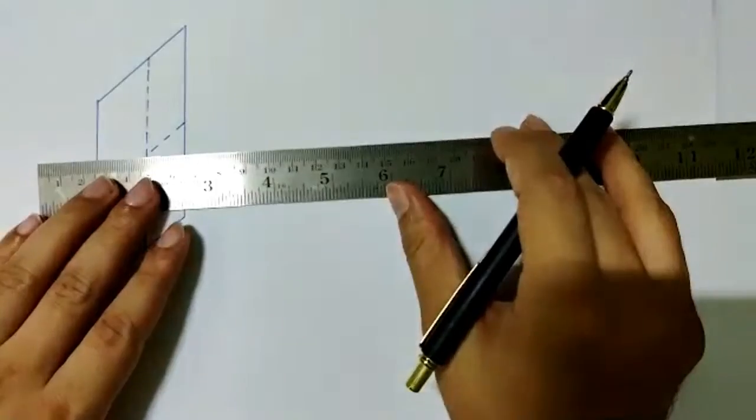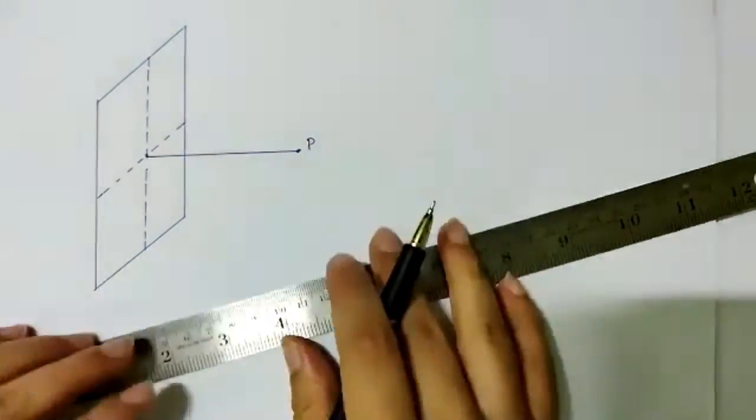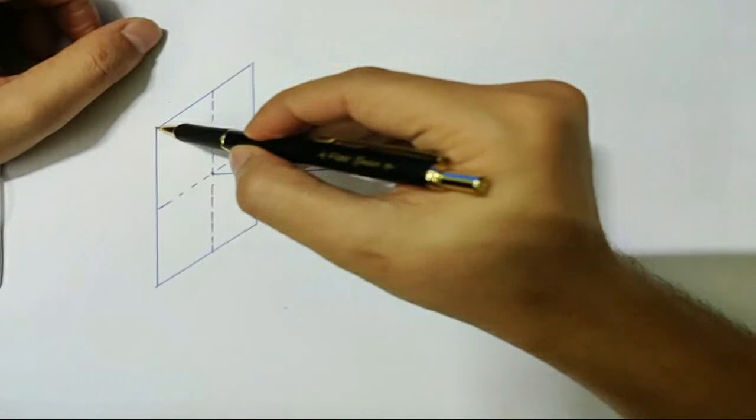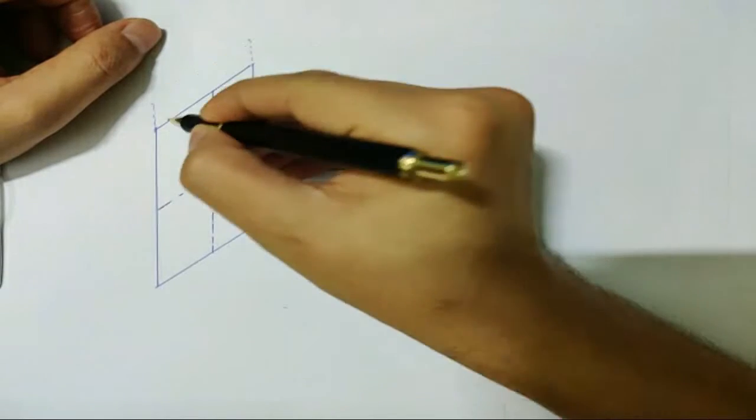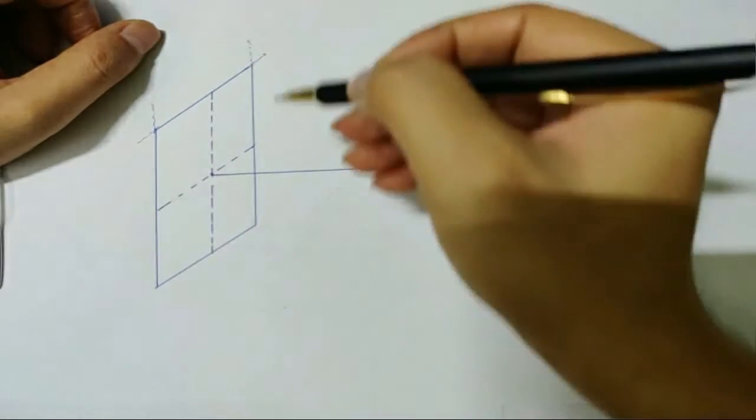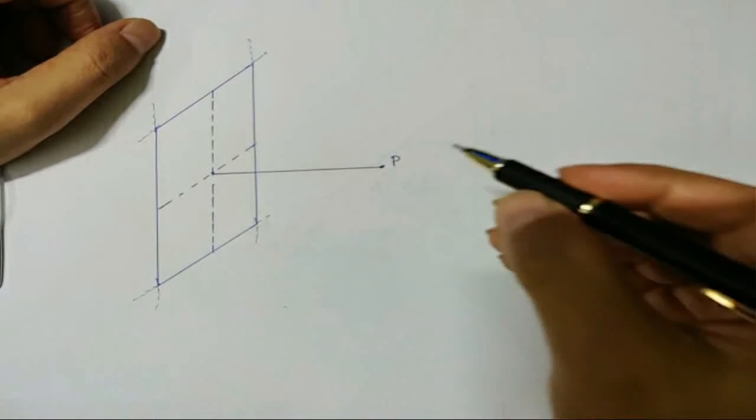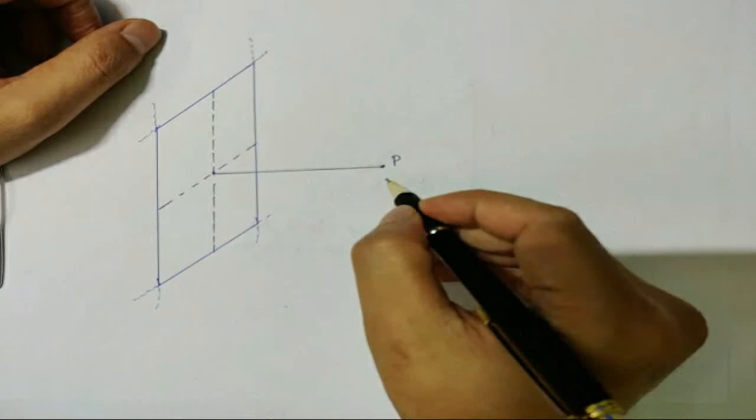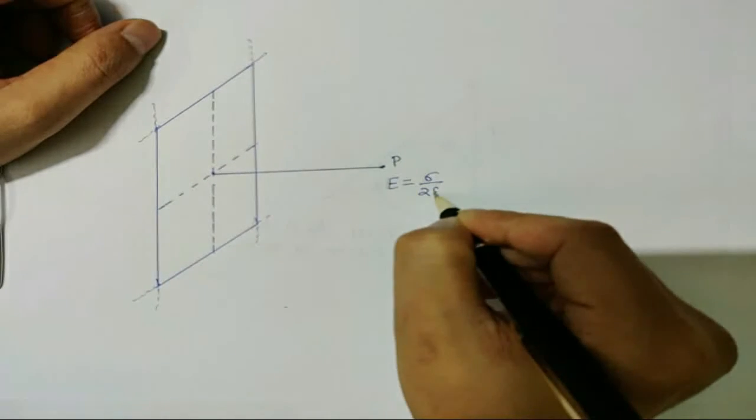Okay guys, as you see, this is an infinite sheet of charge. Consider it to be an infinite sheet of charge. And we already know that the electric field due to this infinite sheet of charge at point P is given by sigma by two epsilon naught.